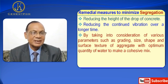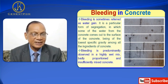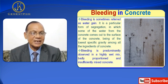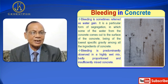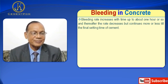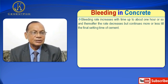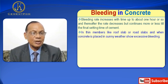Now I will discuss bleeding. Bleeding is sometimes referred to as water gain. It is a particular form of segregation in which some of the water from the concrete comes out to the surface, being of the lowest specific gravity among all the ingredients. Bleeding is predominantly observed in a highly wet mix, badly proportioned, and insufficiently mixed concrete. Bleeding rate increases with time up to about one hour or so, and thereafter the rate decreases but continues more or less till the final setting time of cement. In thin members like roof slabs or road slabs, and when concrete is placed in sunny weather, there is excessive bleeding. Bleeding causes the formation of a porous, weak and non-durable concrete layer at the top of the placed concrete.